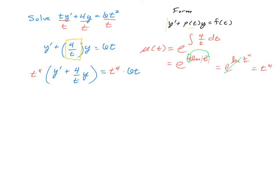Next step is to distribute. So in doing so, we're going to have a t to the 4th times y prime. And then when we distribute that t to the 4th to the 2nd term, we're going to have a 4 times t cubed times the y. And on the right-hand side, we have 6 times t to the 5th.